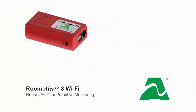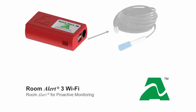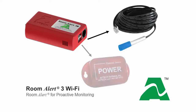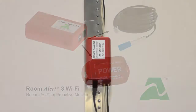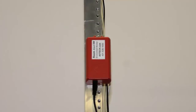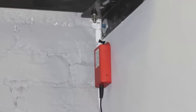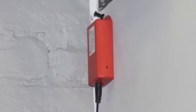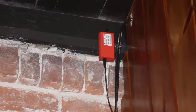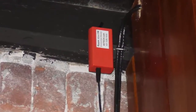You can easily add additional sensors to the Room Alert 3 Wi-Fi to monitor conditions such as humidity, power, flood, and more. Larger facilities can install multiple Room Alert 3 Wi-Fi's to help track environment conditions in those out-of-the-way or hard-to-reach areas.